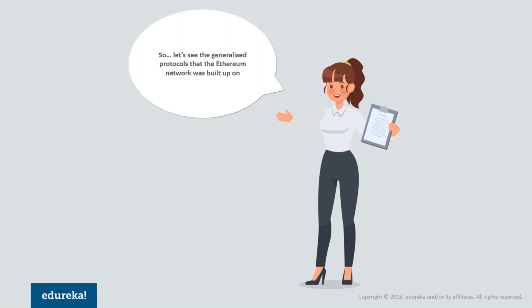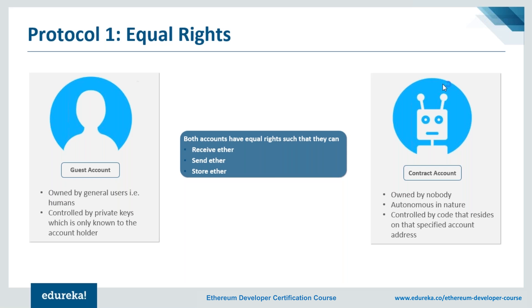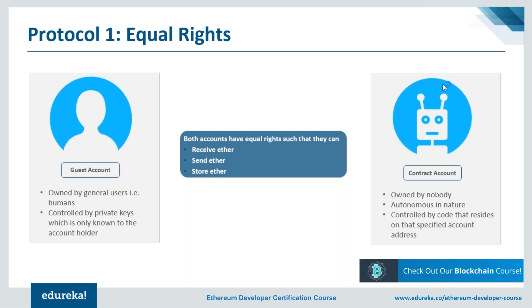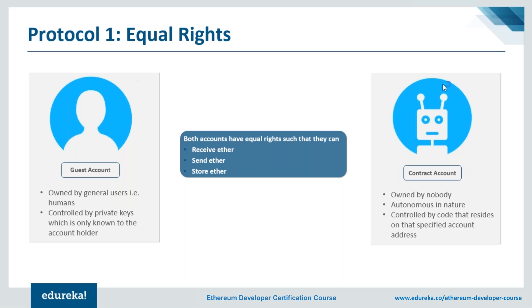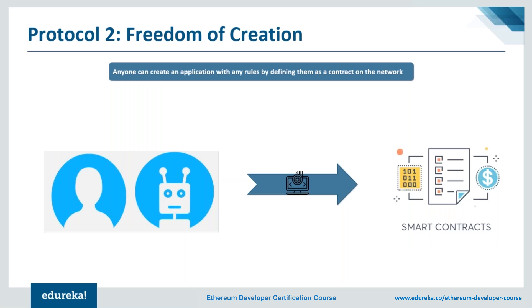Ethereum's sense of generality — making adding new features seamless for developers — is mainly possible through its simplified and generalized protocols. First, Ethereum has two types of accounts: EOA (externally owned accounts), owned by everyday people and controlled with a private key, and contract accounts, which are not owned by anyone and reside at an address on the blockchain where smart contracts live, controlled by code. Both account types have equal rights on the network — they can both send, receive, and store Ether, Ethereum's network-specific cryptocurrency.